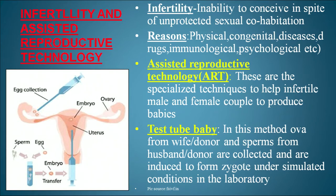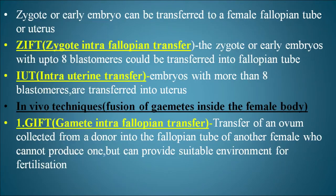The first ART method is the test tube baby. In this method, ova from the wife or a donor and sperms from the husband or a donor are collected and induced to form a zygote under simulated conditions in the laboratory, similar to the human body. The zygote or early embryo can be transferred to the fallopian tube (zygote intrafallopian transfer) or the uterus. An early embryo with up to eight blastomeres can be transferred to the fallopian tube, while embryos with more than eight blastomeres are transferred into the uterus (intrauterine transfer, IUT).